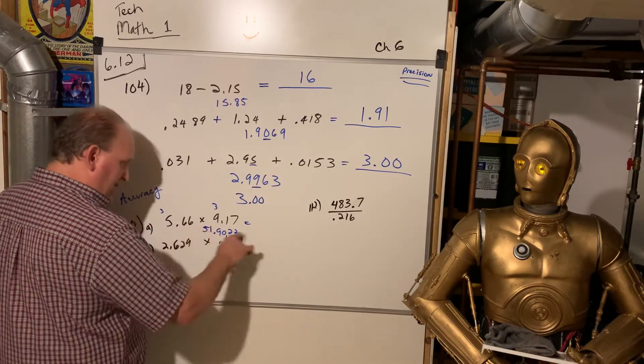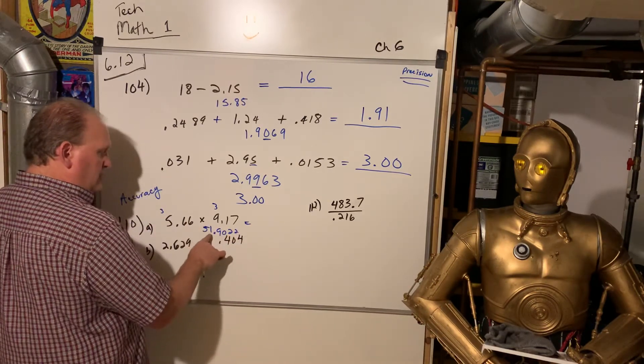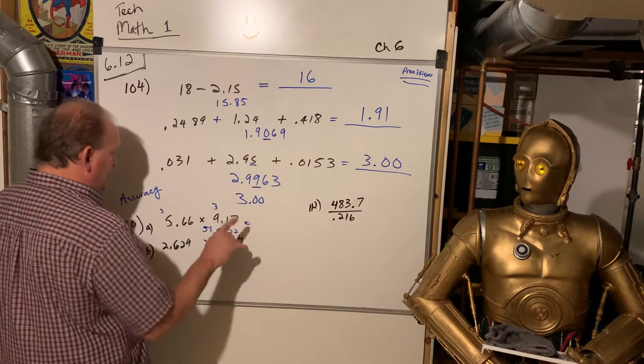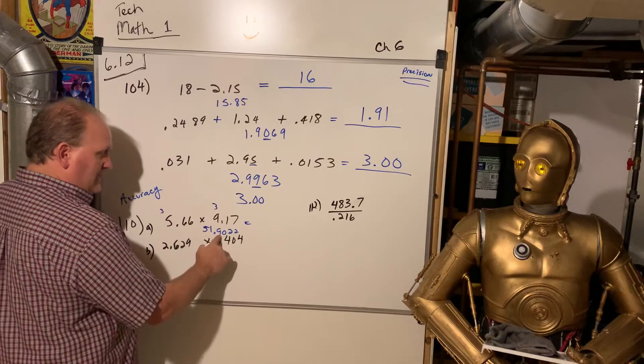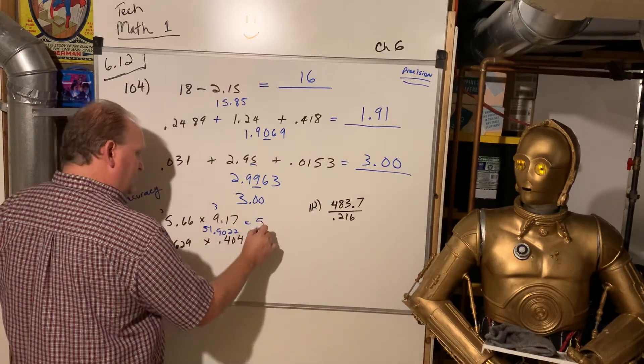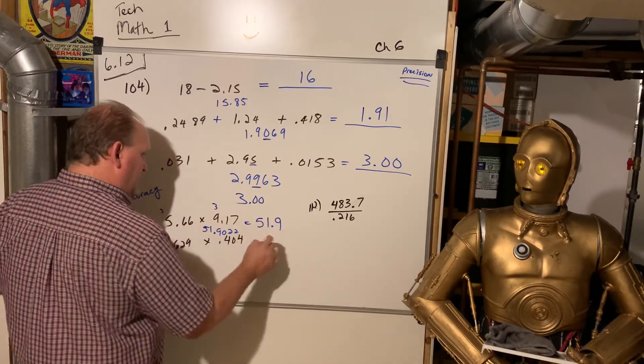That comes out to be 51.9022. But if I wrote that out, that answer, that would give me 1, 2, 3, 4, 5, 6 significant digits. I only get 3. So, 51.9,